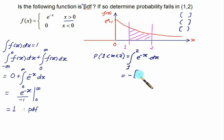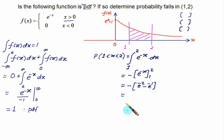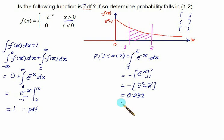The integral of e^(-x) is minus e^(-x), evaluated from 1 to 2. This gives minus e^(-2) minus (minus e^(-1)), and solving this gives approximately 0.232, or 23.2 percent. This is how you solve problems involving continuous random variables.